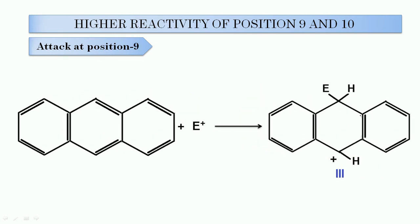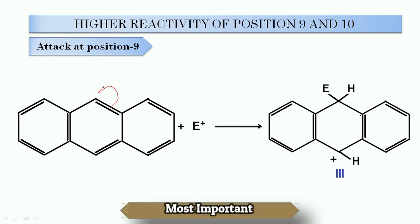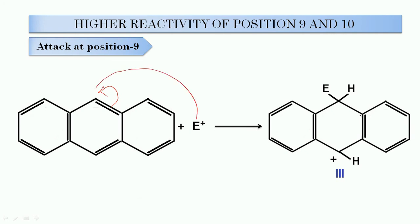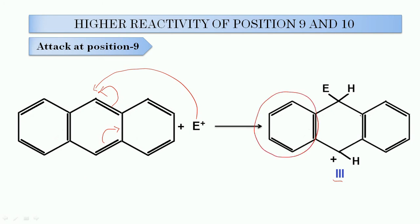Similarly, when the attack of the electrophile occurs at position 9, this pi bond shifts toward this side and the electrophile attacks on position number 9. This pi bond shifts toward this side and we get the most stable resonating structure out of various contributing structures. It is very clear from this most stable resonating structure that it has two benzene rings intact. The resonance energy of one benzene ring is equal to 151 kJ/mol. Since we have two benzene rings, the total resonance energy is equal to 302 kJ/mol.